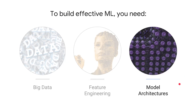The third thing that you need for effective machine learning is to use an appropriate model architecture. Different types of problems are better addressed with different types of models. For example, if you have a text classification problem, you want to be able to use CNNs and RNNs — things that we will look at in this specialization.